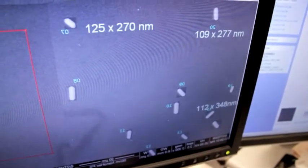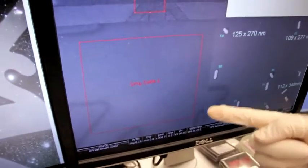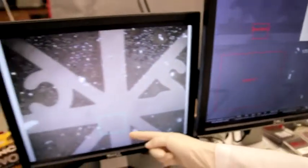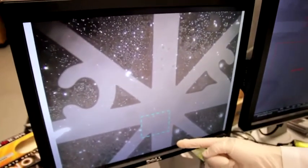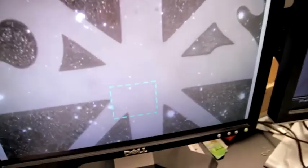Using an indexed TEM grid, we've been able to create a map on the sample, which allows us to identify this region in scanning electron microscopy and then identify the same region in dark field scattering microscopy, which allows us to visualize the scattering of nanoparticles as bright spots against a dark background.